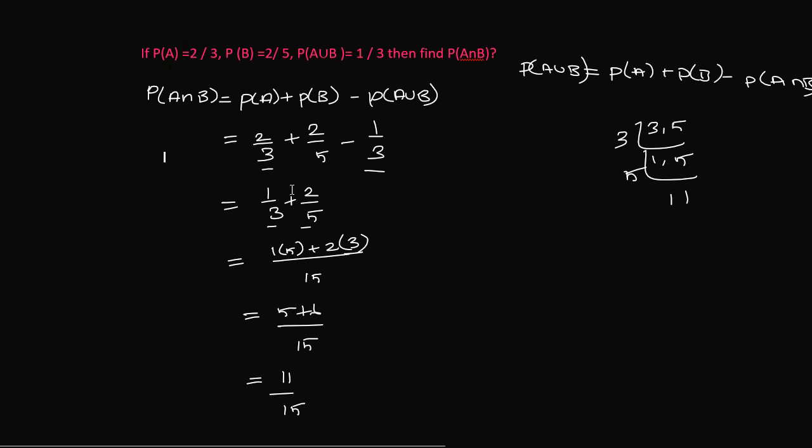So 3 and 5, LCM is 15. 15 divided by 3 is 5, so multiply the numerator by 5. Plus 2, for 5 table, 15 divided by 5 is 3 times.